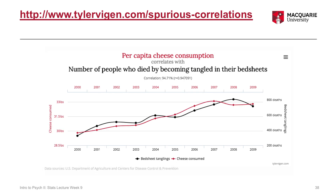The next one, which is my personal favourite, shows per capita cheese consumption in the red line and the number of people who died by becoming tangled in their bedsheets in the black line. They are very tightly related — both increase over time and then plateau at the end. The correlation here is huge: 0.94 or 0.95, a super strong correlation. But it would be a little misleading to conclude that one of these things causes the other, although there might be something going on that I'm just missing.